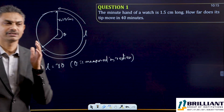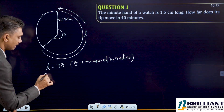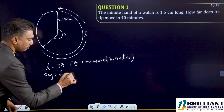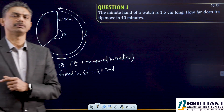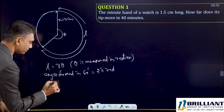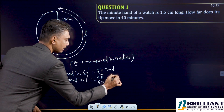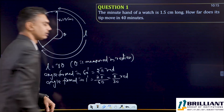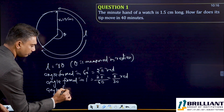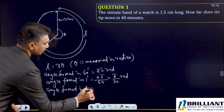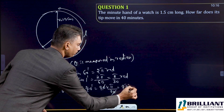The full circle is how many radians? One full rotation of a circle is 2π radians. So angle formed in 60 minutes is equal to 2π radians. Angle formed in 1 minute is equal to 2π/60, which equals π/30 radians. Therefore, angle formed in 40 minutes equals 40 × π/30, which is equal to 4π/3 radians.